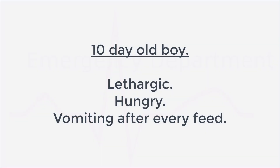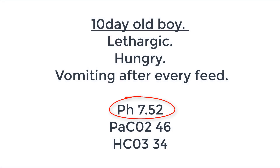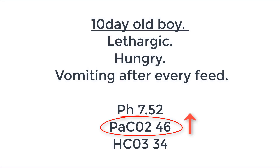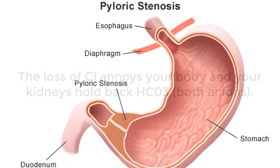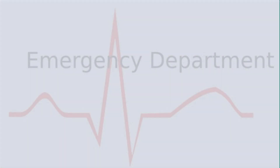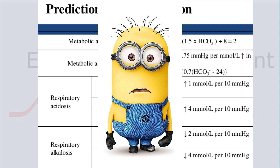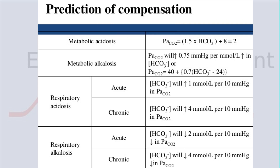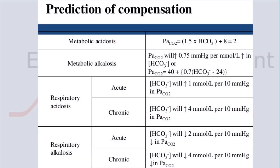Example: a 10-day-old boy, lethargic, very hungry, vomiting after every feed. His pH shows alkalosis, CO2 is elevated, and bicarbonate is also elevated. This is pyloric stenosis. The bicarb is elevated because the kidneys treat bicarbonate and chloride similarly — both negatively charged — so they hold back bicarbonate when you lose a lot of chloride. I've put the full compensation details on screen; in practice I remember the chronic respiratory and metabolic acidosis compensations and use Google or Life in the Fast Lane for the others.